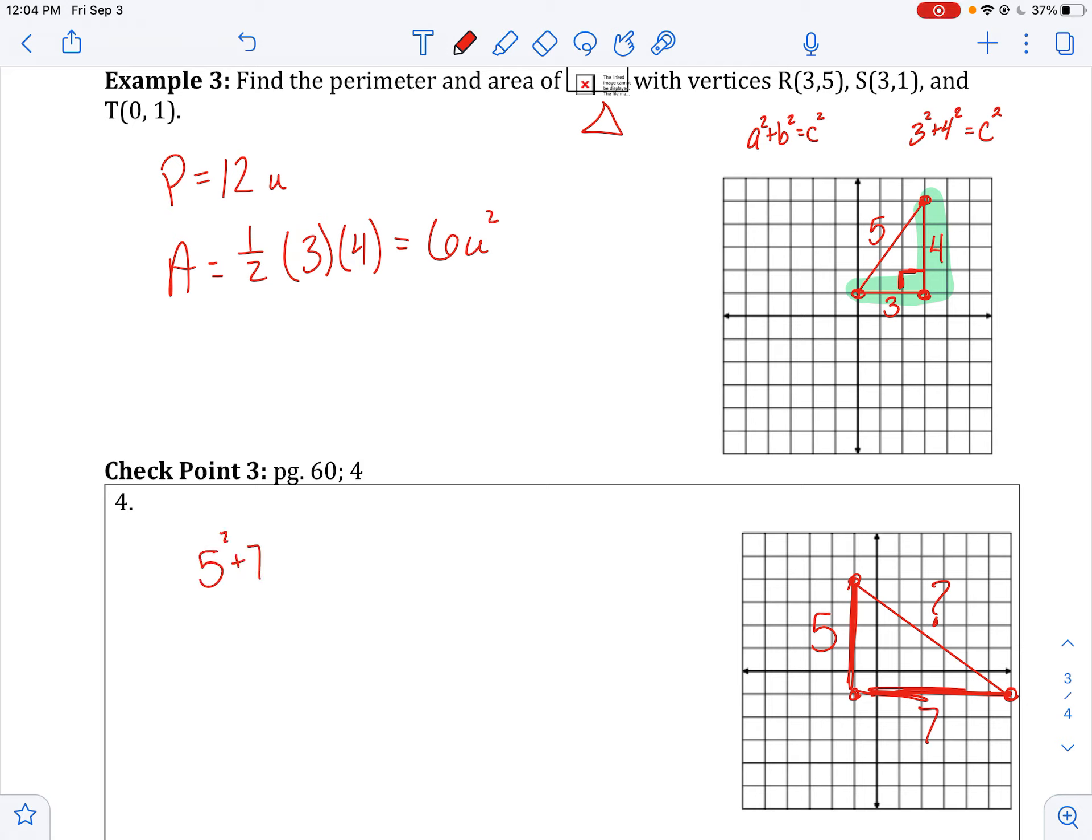So let's see, 5 squared plus 7 squared equals c squared. c would be the square root of 74, which is about 8.6 units. So this is somewhere around 8.6 units.